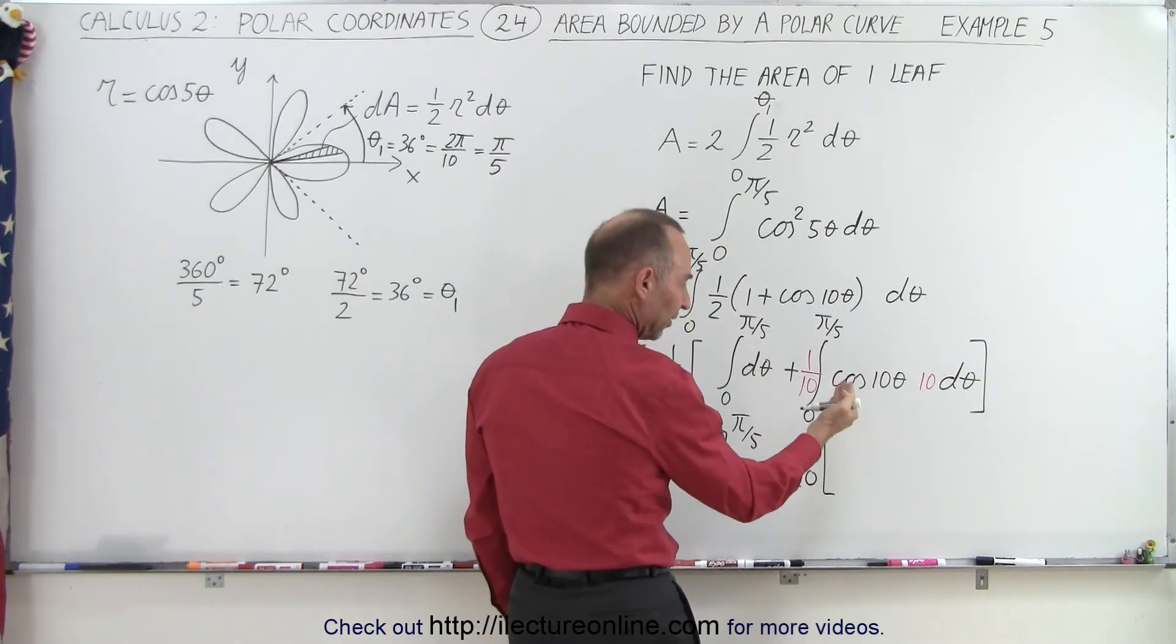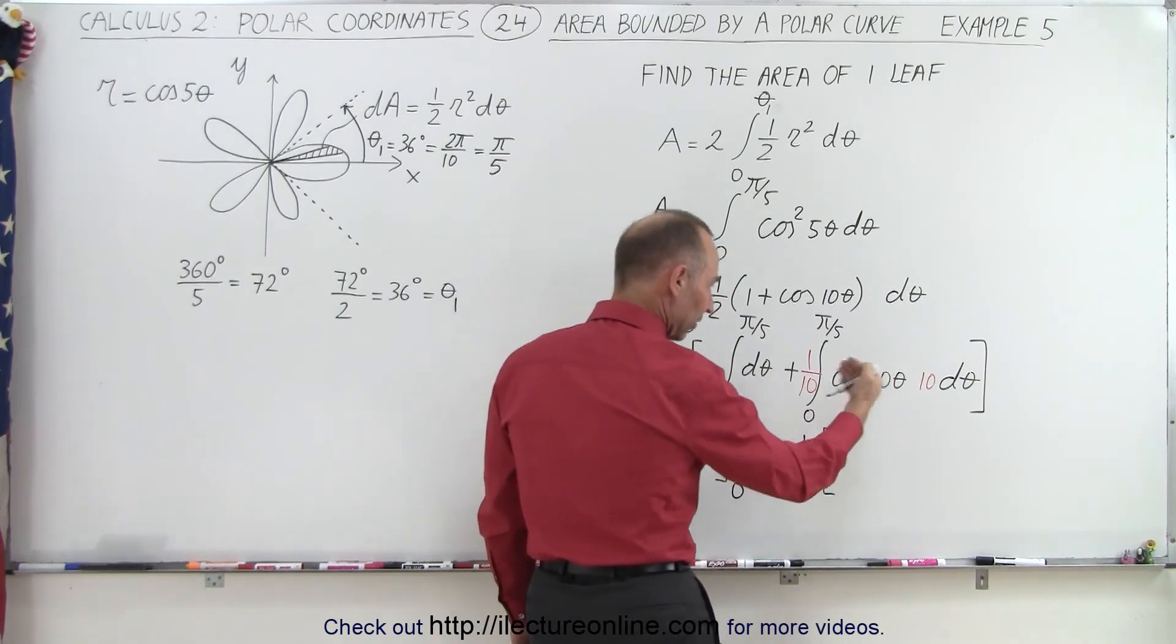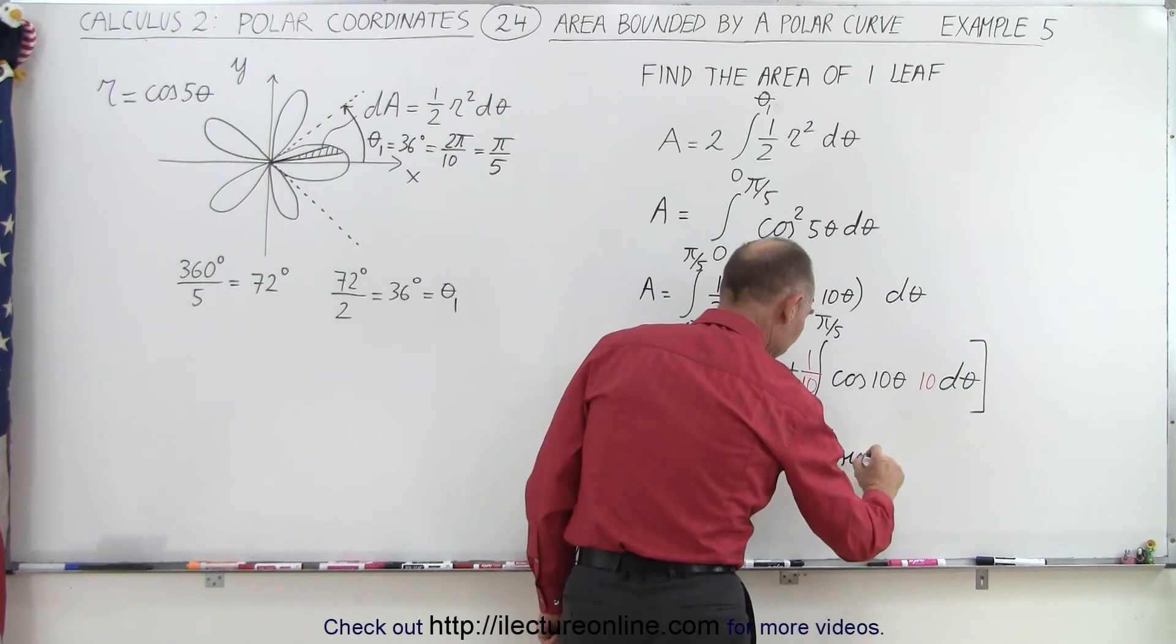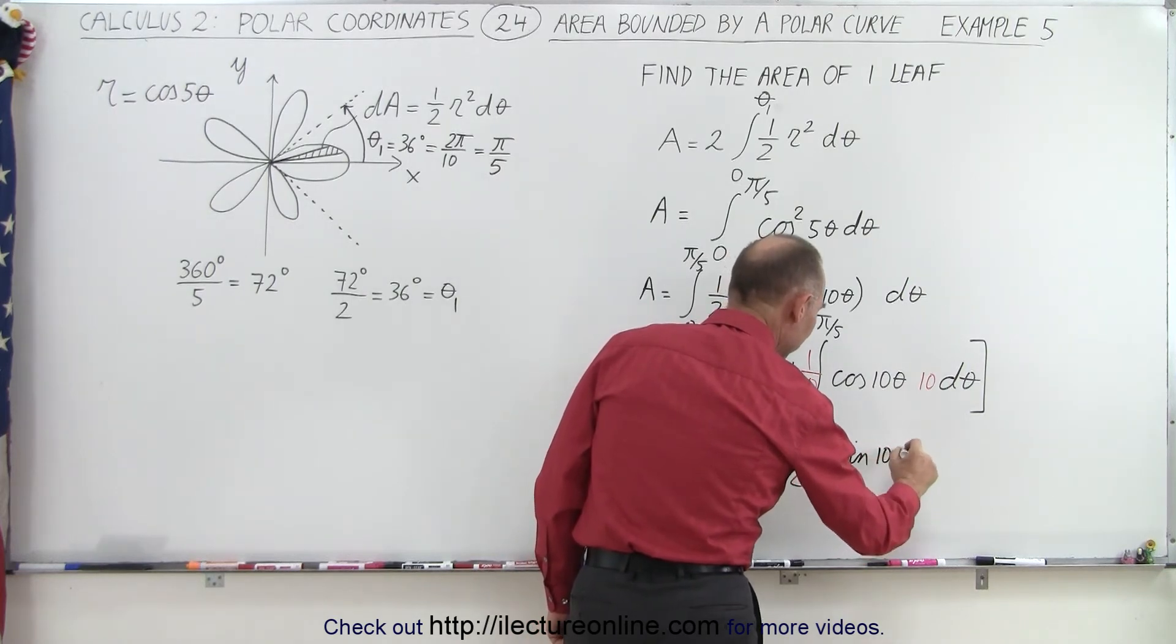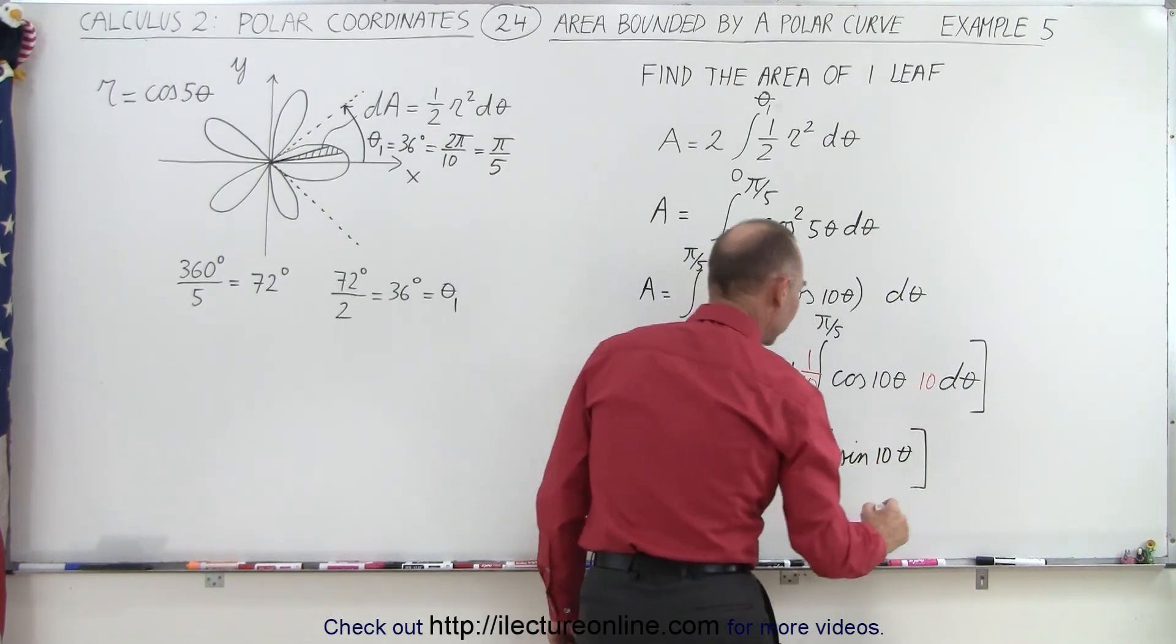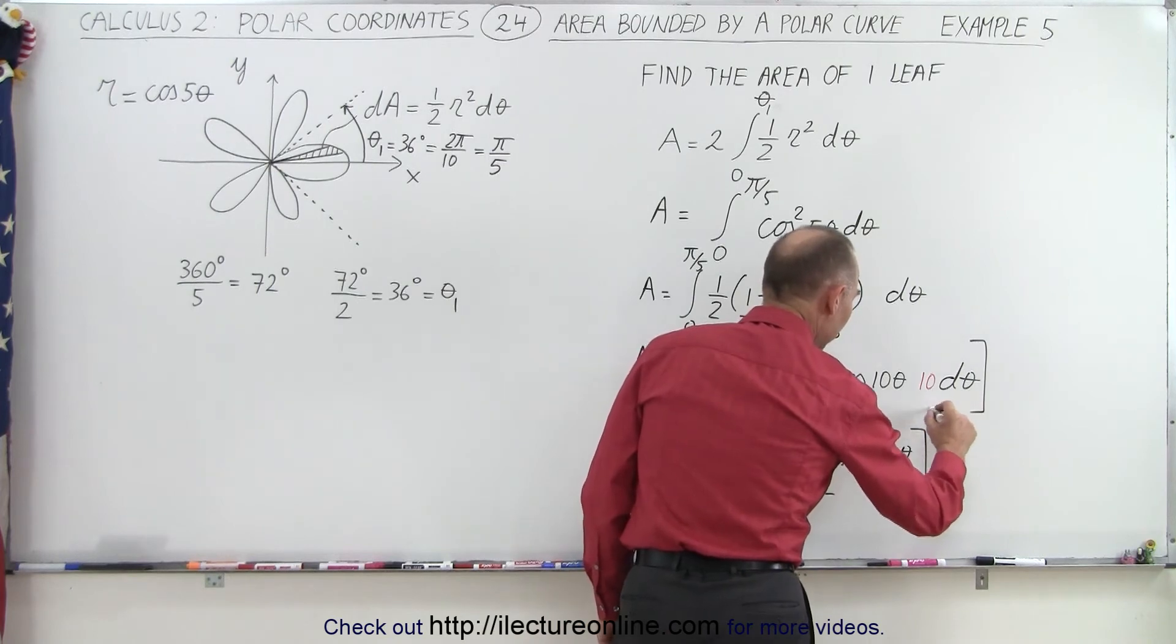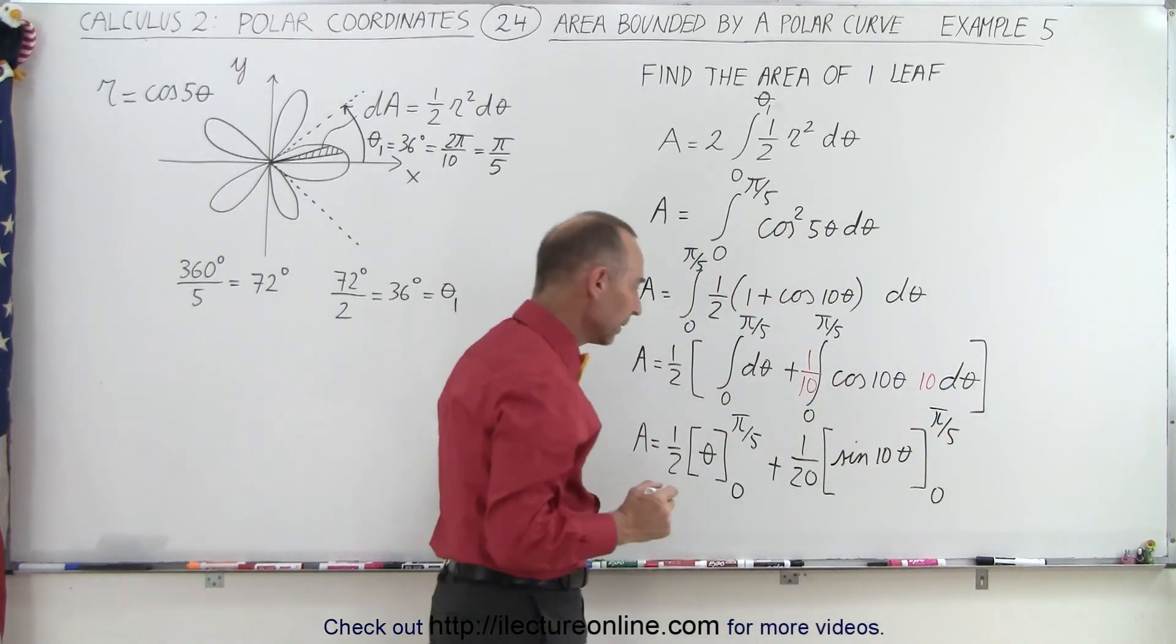Now, the integral of the cosine is the sine, so that would be the sine of 10 theta, integrated from zero to pi over five.